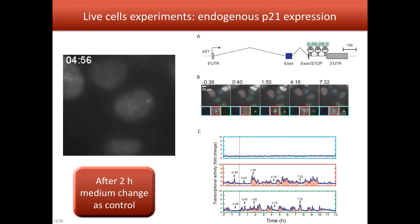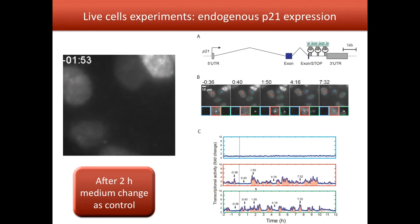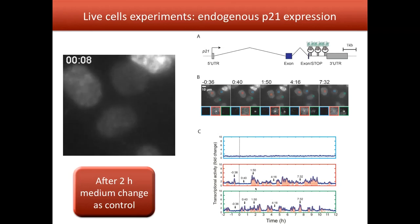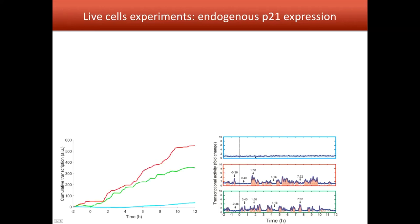We performed this experiment on 80 to hundreds of cells, and we want to find a pattern across the cell population to see how p21 is expressed. One way to do this is to look at how much mRNA has been produced in each cell. For the blue cell it's easy — it didn't produce any mRNA, so the cumulative trace is very flat, close to zero. For the red and green cells, mRNA is produced at different times.